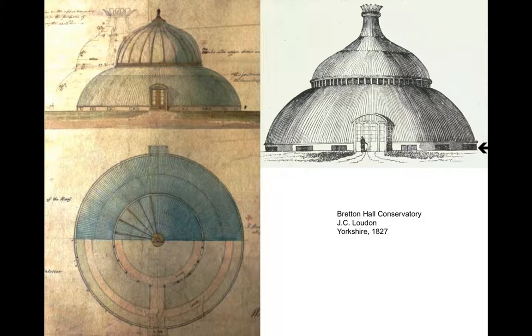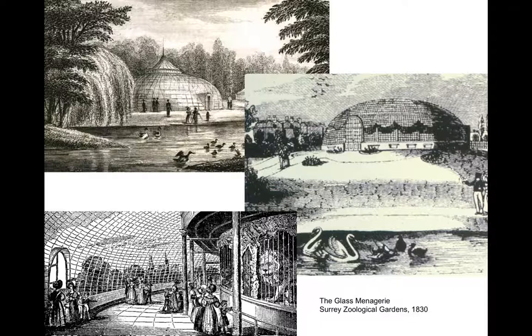Nonetheless, look at the natural passive qualities of this structure: there are vents at the foundation, at mid-height, and at its top. There also most likely would be a solar awning that is supported at the center ring of vents and would extend down to the foundation. Here is the Glass Menagerie built in 1830 at the Surrey Zoological Gardens. In the center image you can see the solar awning that these buildings typically had to reduce solar gain.